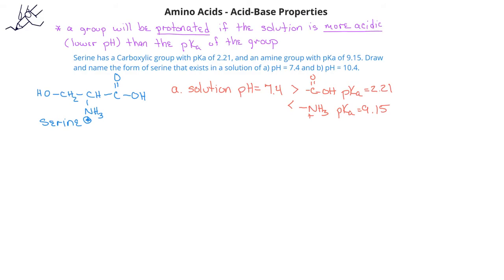Since we know that a group will be protonated if the solution pH is lower than the pKa for the group, that means that the amine group will be in its protonated form, NH3+, because the solution pH of 7.4 is lower than the pKa of 9.15.